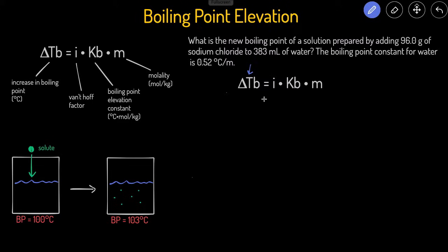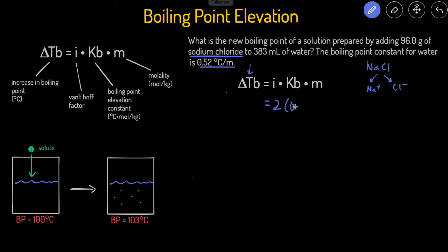Looking at the equation: i is the Van't Hoff factor — how many species the solute breaks up into. Our solute is sodium chloride, NaCl, which is an ionic compound. When dissolved in water, it breaks up into Na⁺ and Cl⁻, so it breaks into two species, meaning the Van't Hoff factor is 2. Kb, the boiling point elevation constant, is given as 0.52 degrees Celsius per molal.